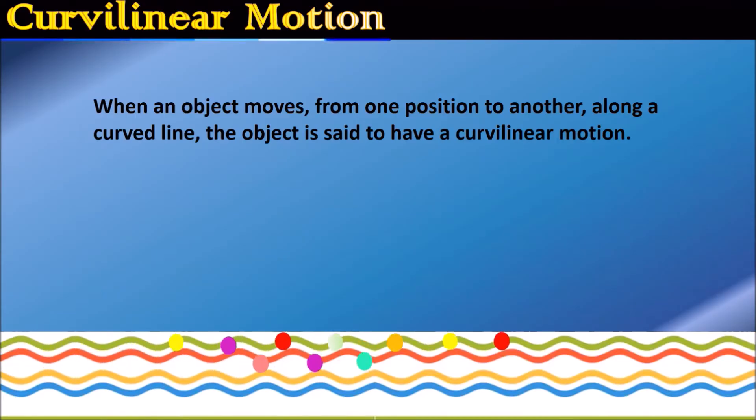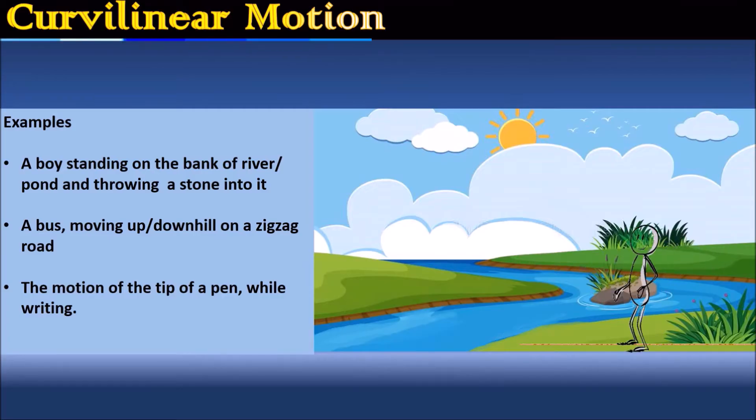Let us see the examples. A boy is standing on the bank of a river or a pond and he's throwing a stone into it. So how does the stone move? It moves in a curvilinear motion.